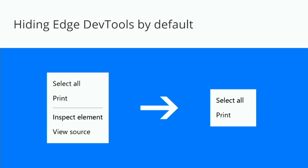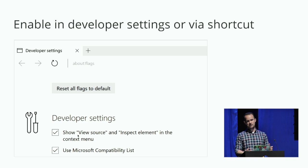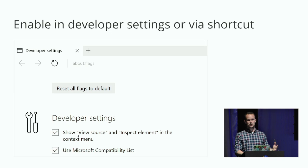All the developer options like view source and inspect element are now hidden because regular users don't care about these things — they just want to go to Netflix or Facebook. We're trying to balance the user experience. You can go to about flags and enable it there, just like Safari. And we've kept the F12 shortcut, so if you press F12 or something that opens DevTools, we re-enable the mode again. We're doing this as an experiment, looking at the data, and re-evaluating. We'd love your feedback as developers, because we're trying to shield end users as much as possible from these powerful tools.